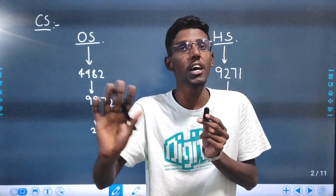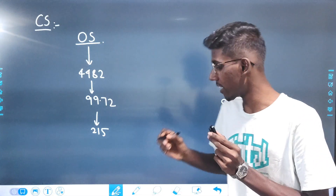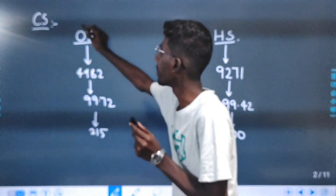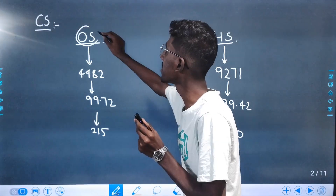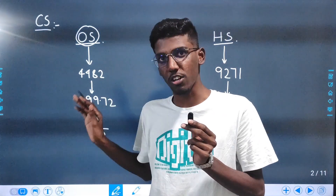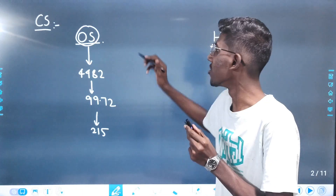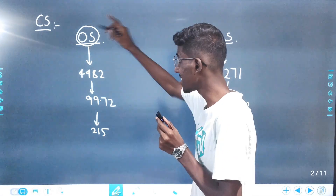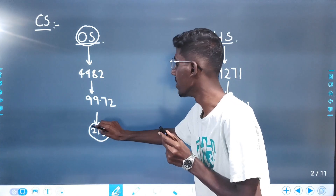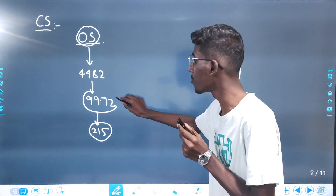If you look at B.Tech in NIT Calicut, for other states, CS is 215 marks, which is 99.72 percentile.